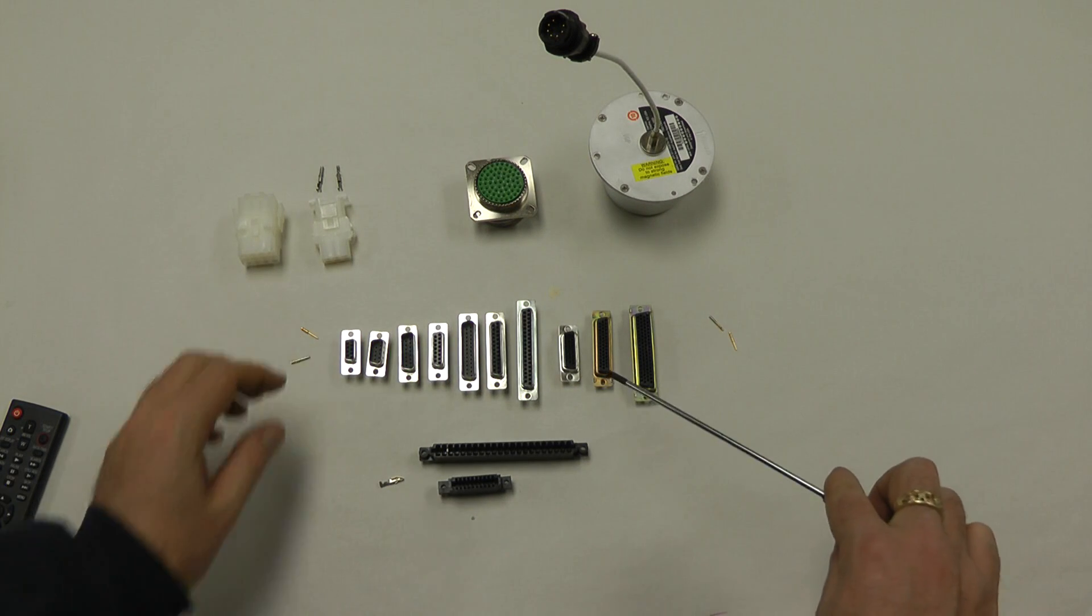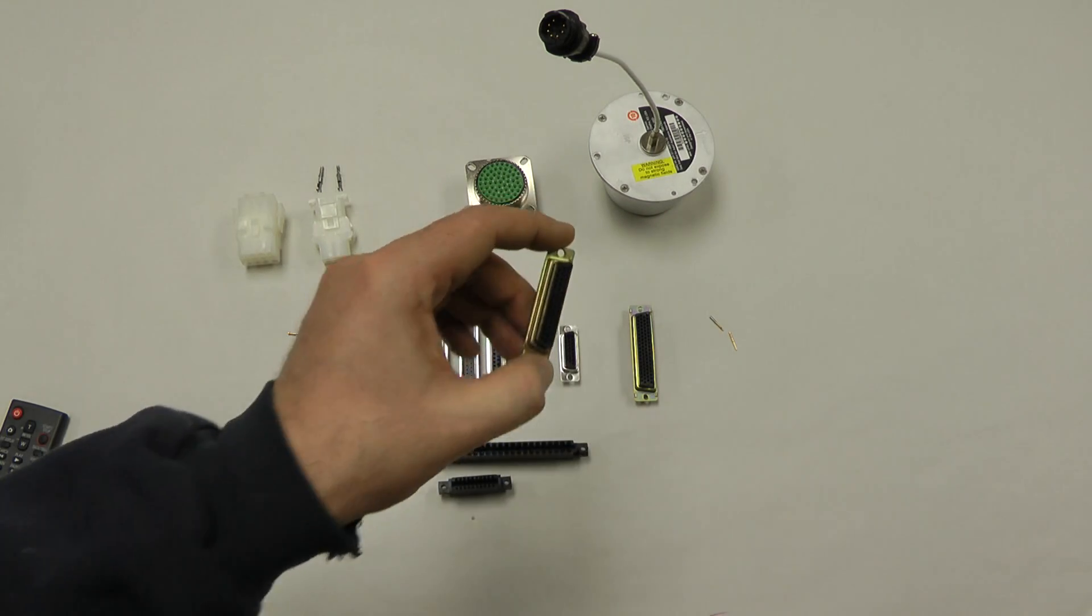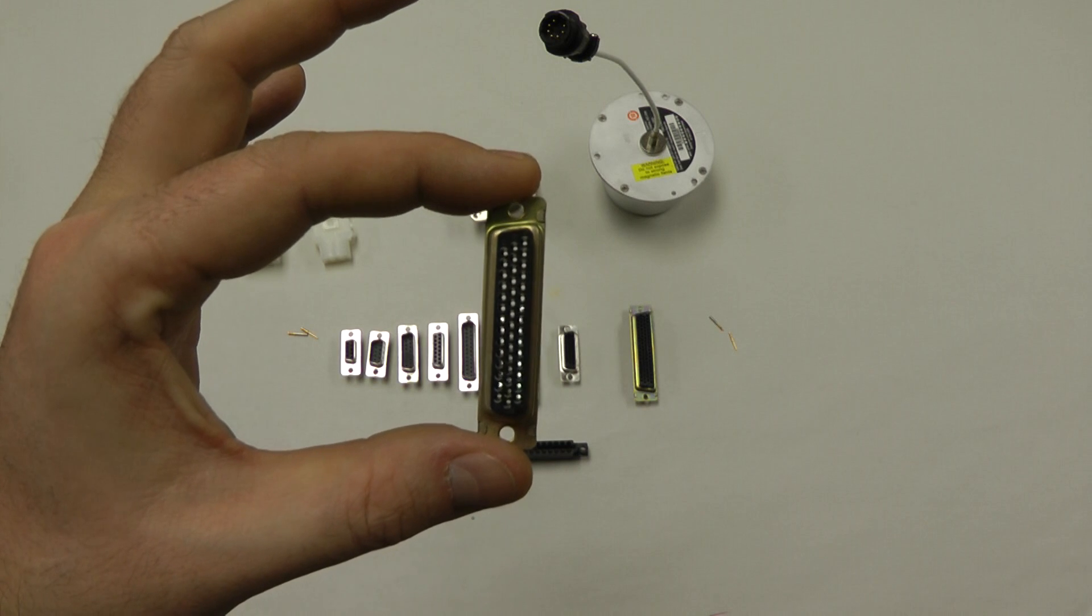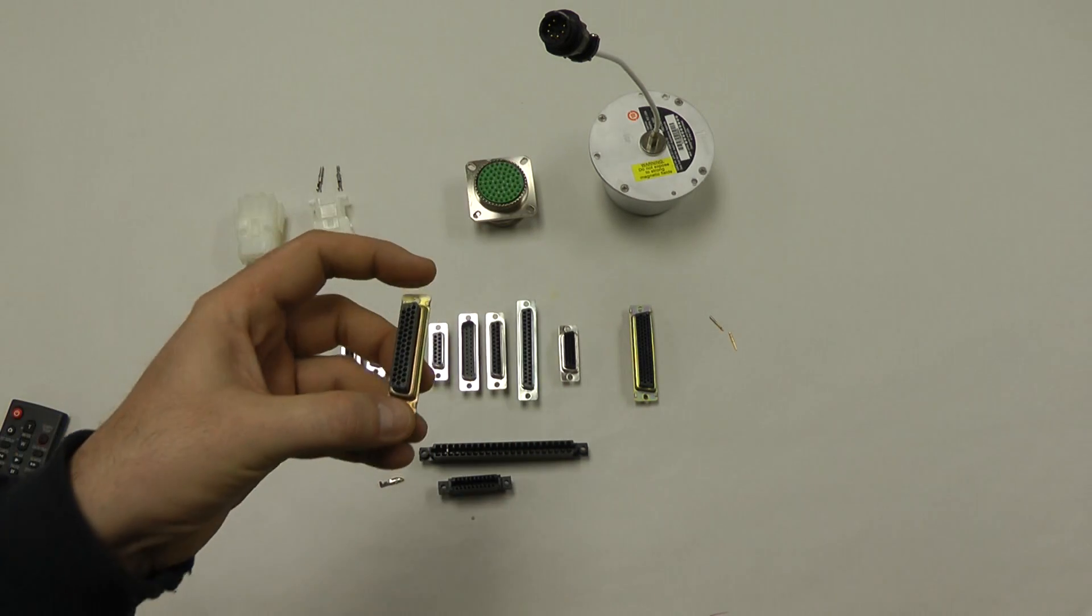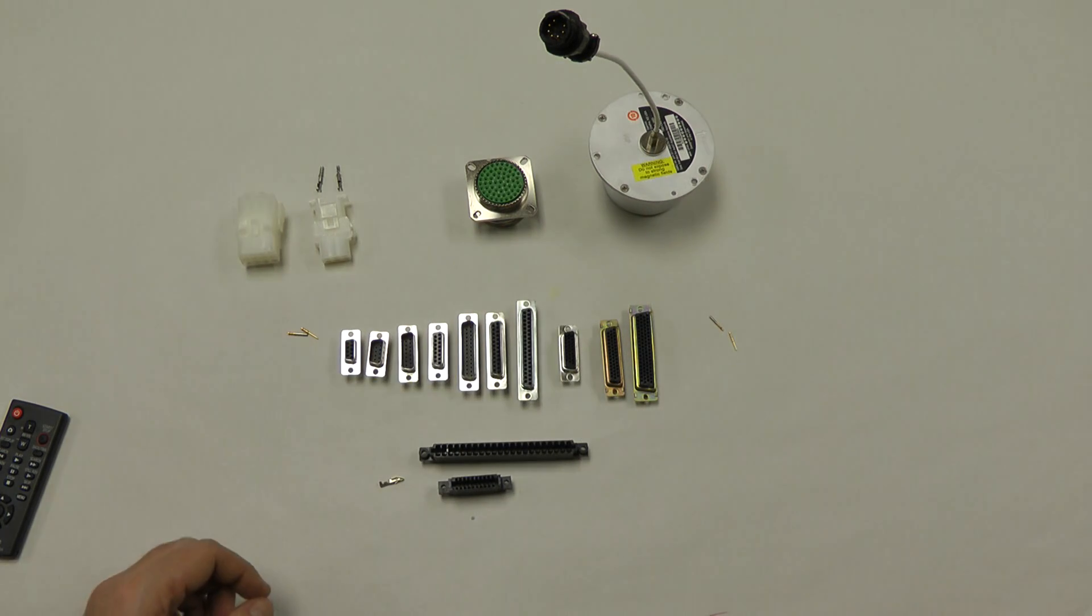On the right side over here you'll see we have some more connectors. They have multiple rows, more than two. These are called high density connectors and you'll notice there's multiple rows of pins there, more than two, sometimes three or four, and there's many more pins inside of those.